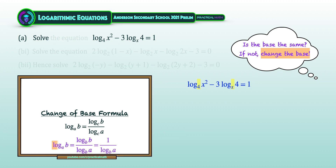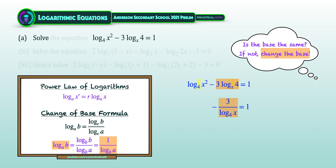We will now apply the quick formula to the second logarithmic term by taking 3 divided by the logarithmic term and swapping the positions of x and 4. With our logarithmic terms now at the same base of 4, we can apply the power law of logarithms, where log x to the power of r to the base of a equals r times log x to the base of a. We bring down the exponent 2, giving us 2 times log x to the base of 4.